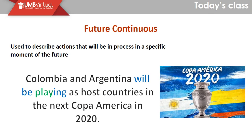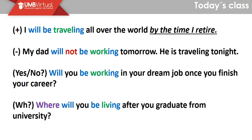So the future continuous is going to be a main topic for this module. We use this topic to describe actions that will be in progress at a specific moment in the future. So it means that when we really want to express something that is going to happen later, we can use future continuous. Let's see one example: Colombia and Argentina will be playing as host countries in the Copa América in 2020. So we are describing an action that is going to happen later.